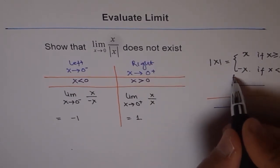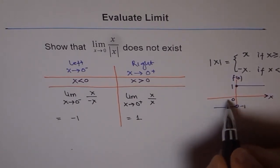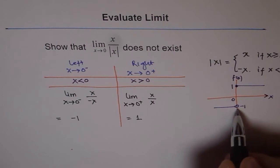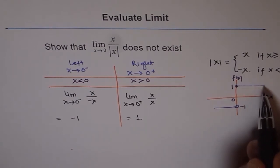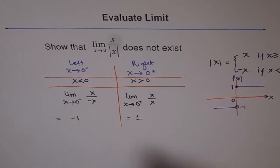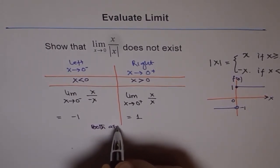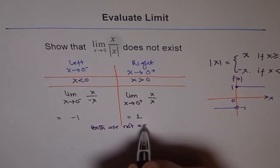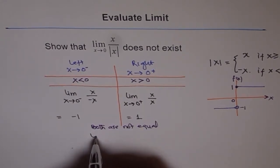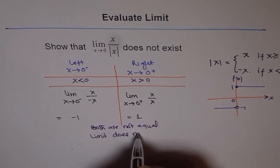So that is the function, and this is x, and at origin, when you approach from left side, you are approaching minus 1. When you are approaching from the positive side, you are approaching plus 1. Since both are not equal, limit does not exist.